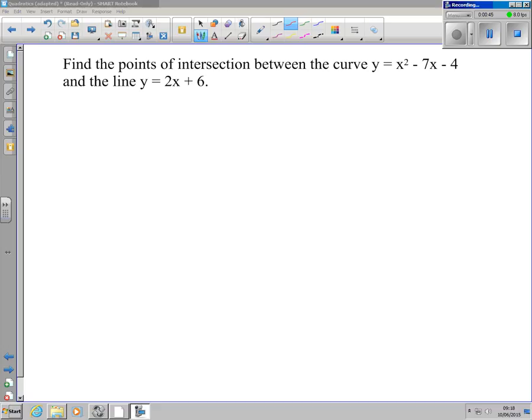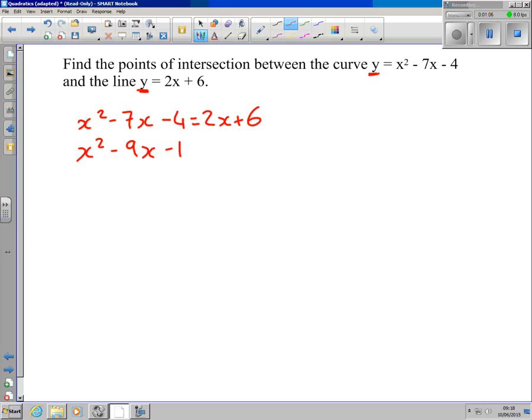This is a simultaneous equation. The easiest thing to do is to get both equations equal to y, so these equations have to be equal to each other. So x² - 7x - 4 equals 2x + 6. We've got a quadratic equation, so bring everything to one side and factorize: x² - 9x - 10 which factorizes to (x - 10)(x + 1), which means our solutions are x = 10 and x = -1.